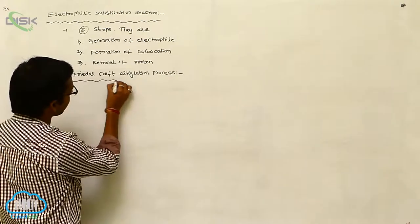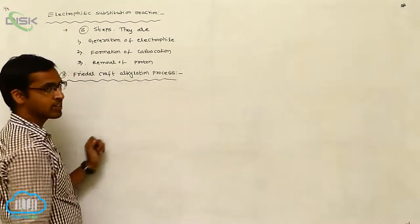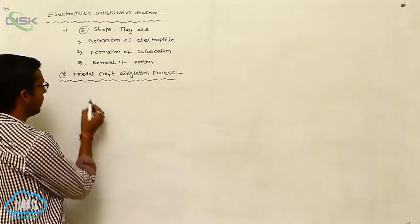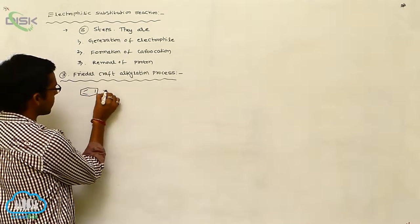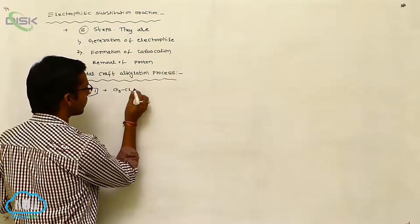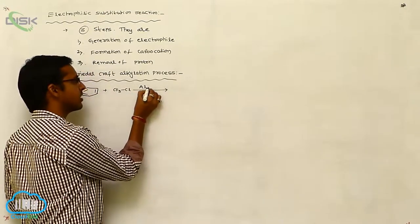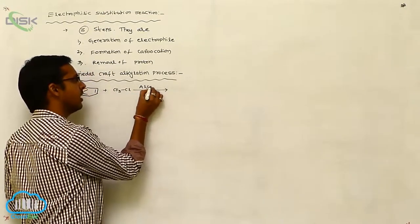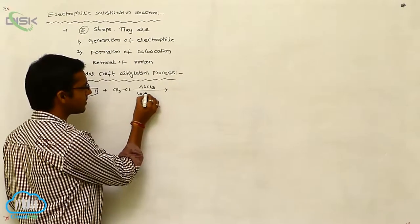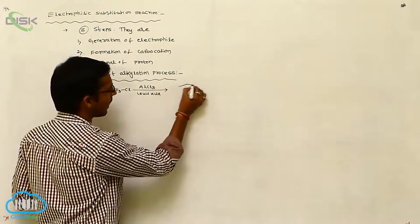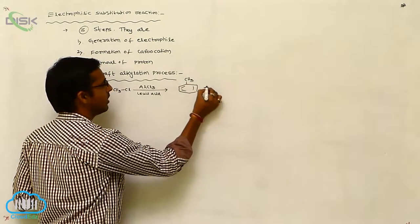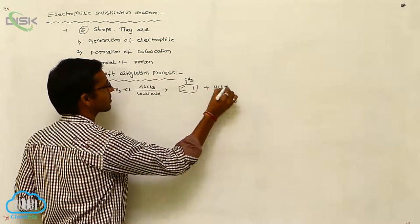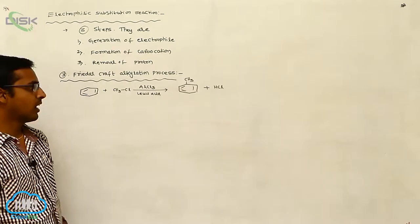The Friedel-Crafts alkylation process is also an example of electrophilic substitution reaction. Here, benzene is reacted with alkyl chloride in the presence of a Lewis acid like aluminum chloride, ferric chloride, or iron chloride. In the presence of a Lewis acid, it gives alkyl benzene. This is called the Friedel-Crafts alkylation reaction.